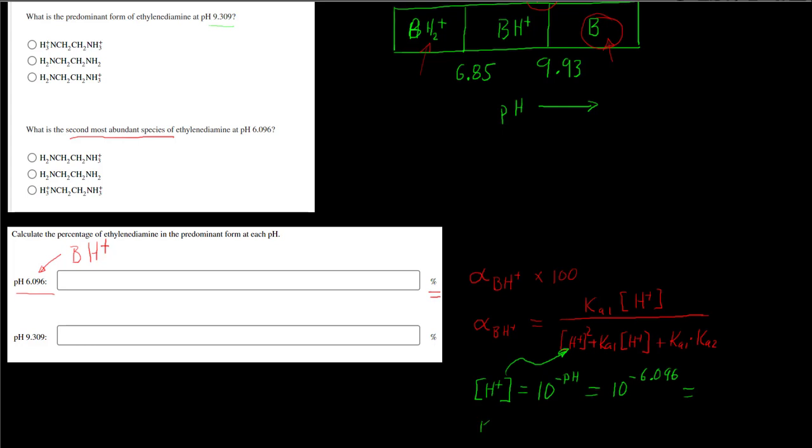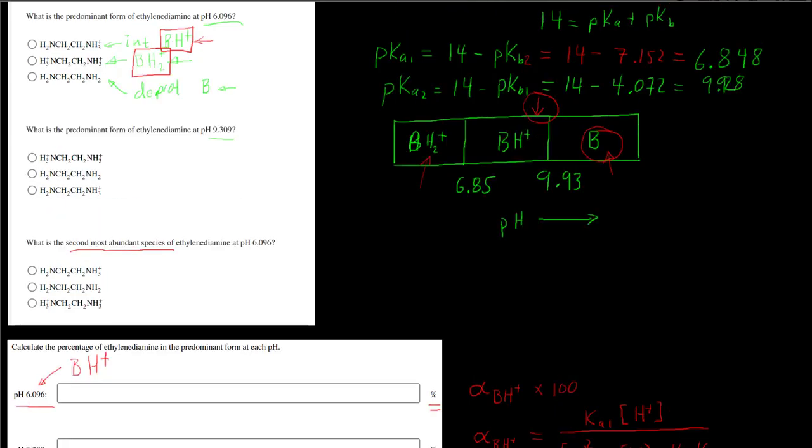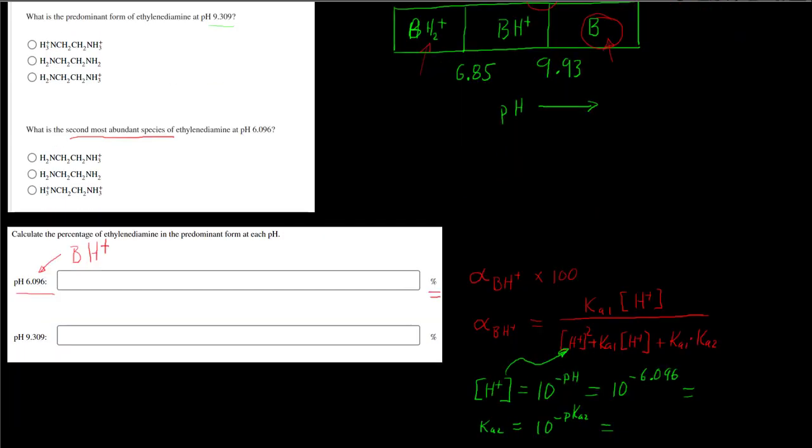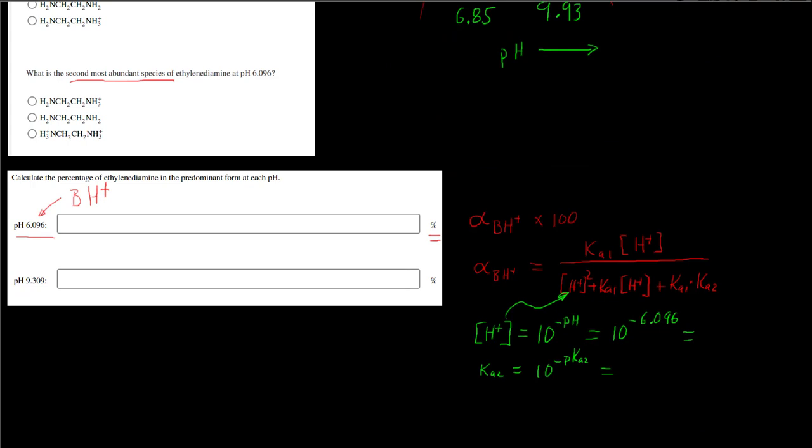You will also need to calculate your KA1s and KA2s, and we get that by taking 10 and raising it to the negative pKA2 power. Up here we saw what our pKA1s and pKA2s were. So pKA2 is 9.928, so we would say the KA2 is going to be 10 raised to the negative 9.928 power. Once you know that, that's what's going to go in for your different Ks in this expression.